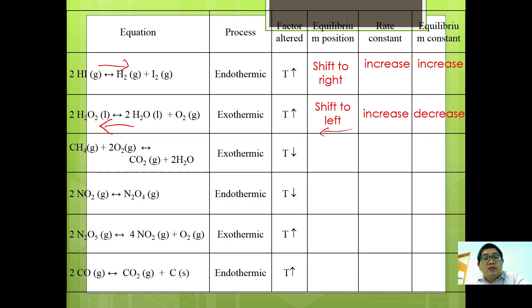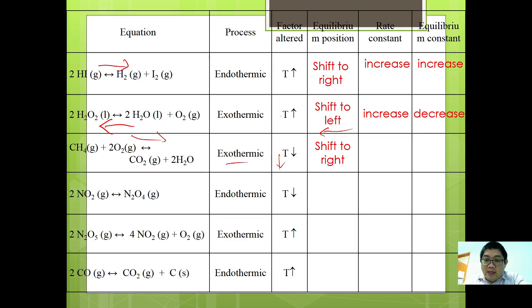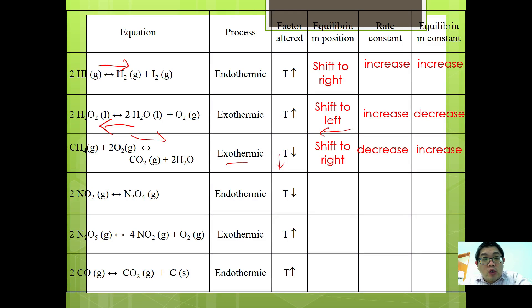The third reaction is CH4 plus 2O2 gives CO2 plus H2O, which is exothermic. Decreasing temperature causes equilibrium to shift in the exothermic direction, which is toward the forward reaction, so equilibrium shifts to the right. However, since temperature decreases, the rate constant also decreases. Since equilibrium shifts right and products increase, Kc will increase.